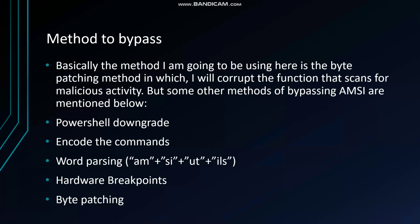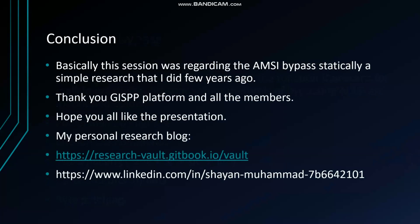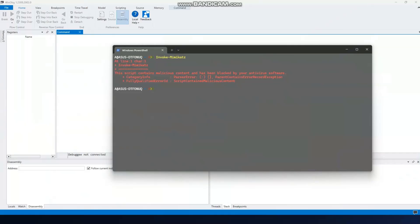Other bypass methods include PowerShell downgrade — in older versions of PowerShell, AMSI was not present, so we can use that. We can encode commands in base64 and decode at runtime. We can use word parsing — dividing strings into multiple bytes — to bypass detection. A relatively newer technique is hardware breakpoints, where you put a breakpoint on the detection function and redirect to another function instead. The method I'll show now is byte patching.